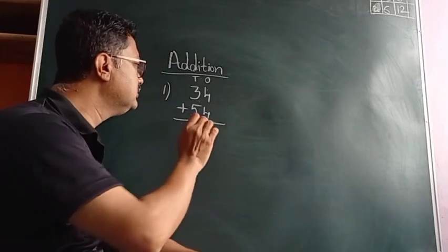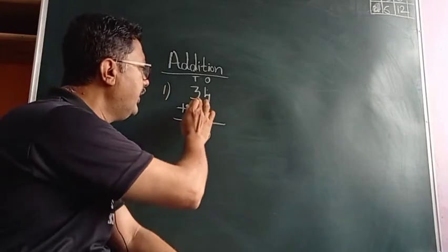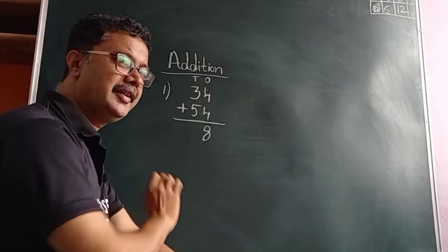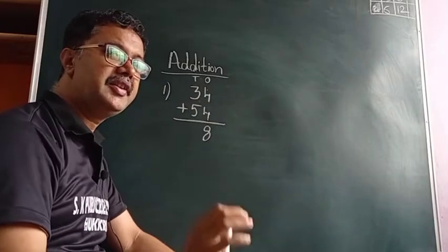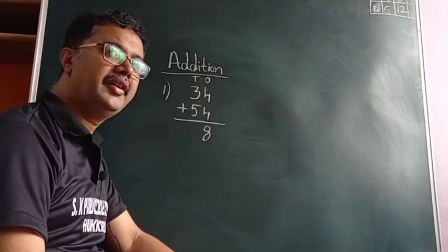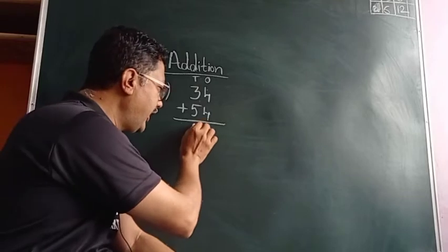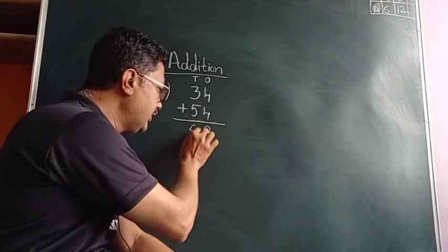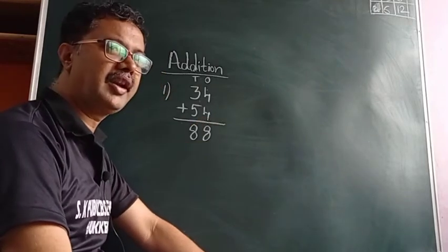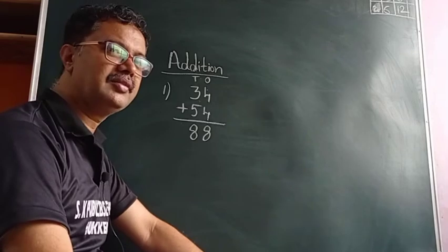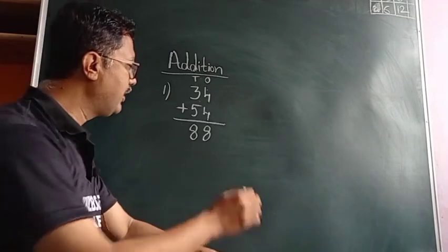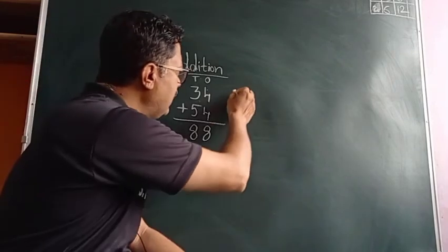Now the tens place: three plus five is equal to eight. So the answer is 88.